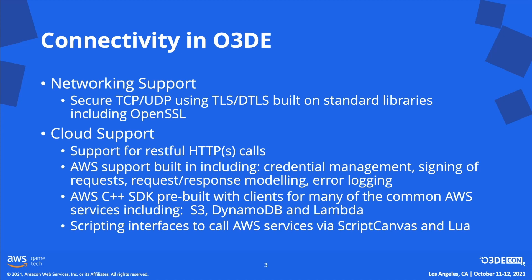Before we really start this talk, I wanted to cover the fact that no cloud services, and that includes AWS, are required to use Open3D Engine. These integrations will always be optional, but hopefully beneficial to you. As we work for and believe in the benefits of AWS, AWS integrations are the focus of our team's contribution to Open3D Engine and of this talk. I also wanted to mention that Open3D Engine has a rich set of networking components to provide all the elements for client-server networking, including support for secure TCP and UDP sockets. These parts of the Engine are out of scope for today's talk, but please see the other networking-focused talks at O3D Econ, or the networking documentation for more information.